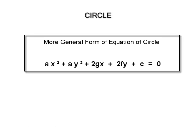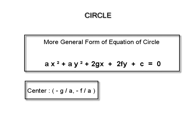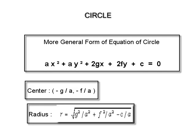A more general form is ax² + ay² + 2gx + 2fy + c = 0, if a ≠ 0. The center of this circle is (−g/a, −f/a) and the radius is r = √(g²/a² + f²/a² − c/a).